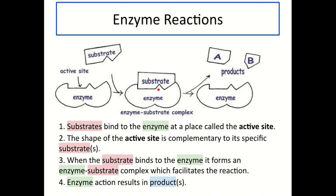Looking in more detail at enzyme reactions, this diagram represents what an enzyme reaction looks like. It's really important that you're able to describe the stages, as this could be a possible extended response question in a test or exam. In stage one, the substrate binds to the enzyme at a point called the active site. Remember, the active site is on the enzyme and is not on the substrate. The shape of the enzyme's active site is complementary to its specific substrate — complementary means they fit together.